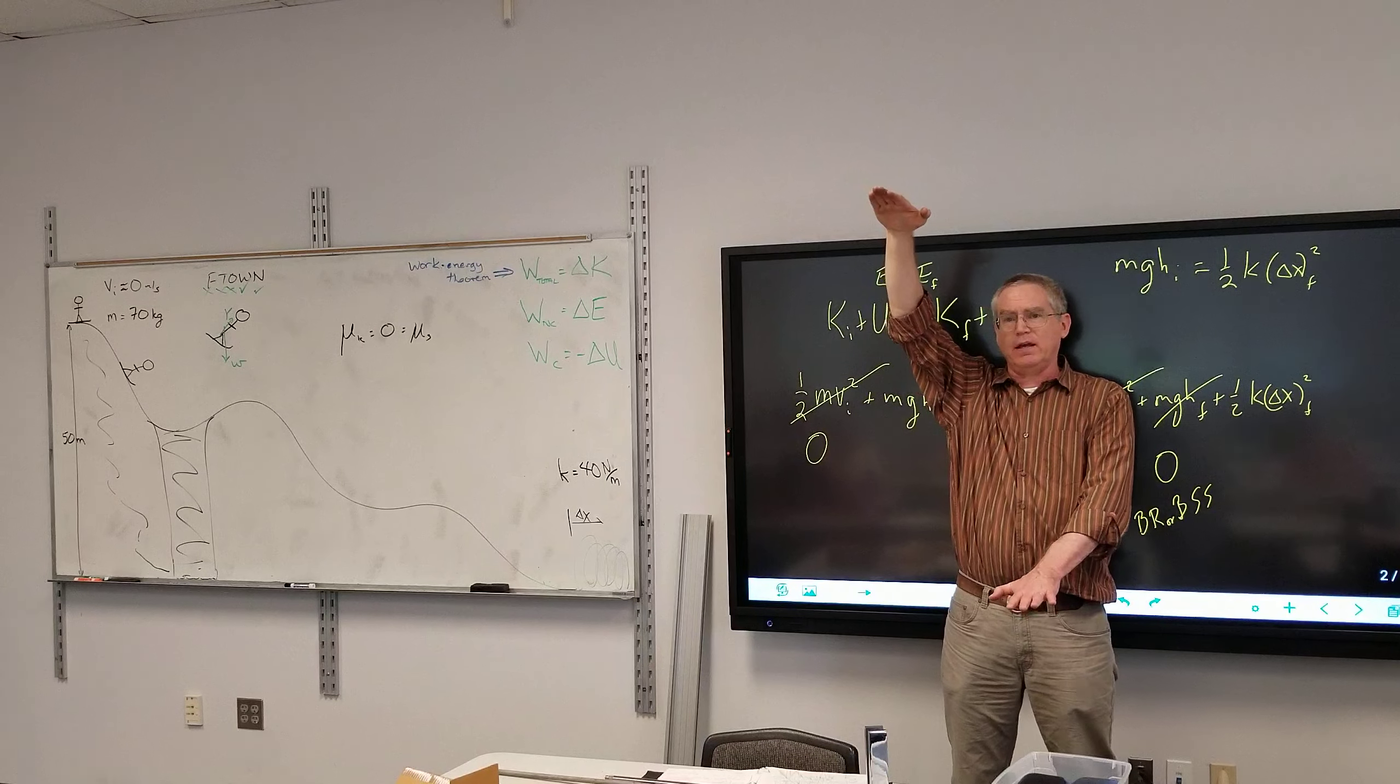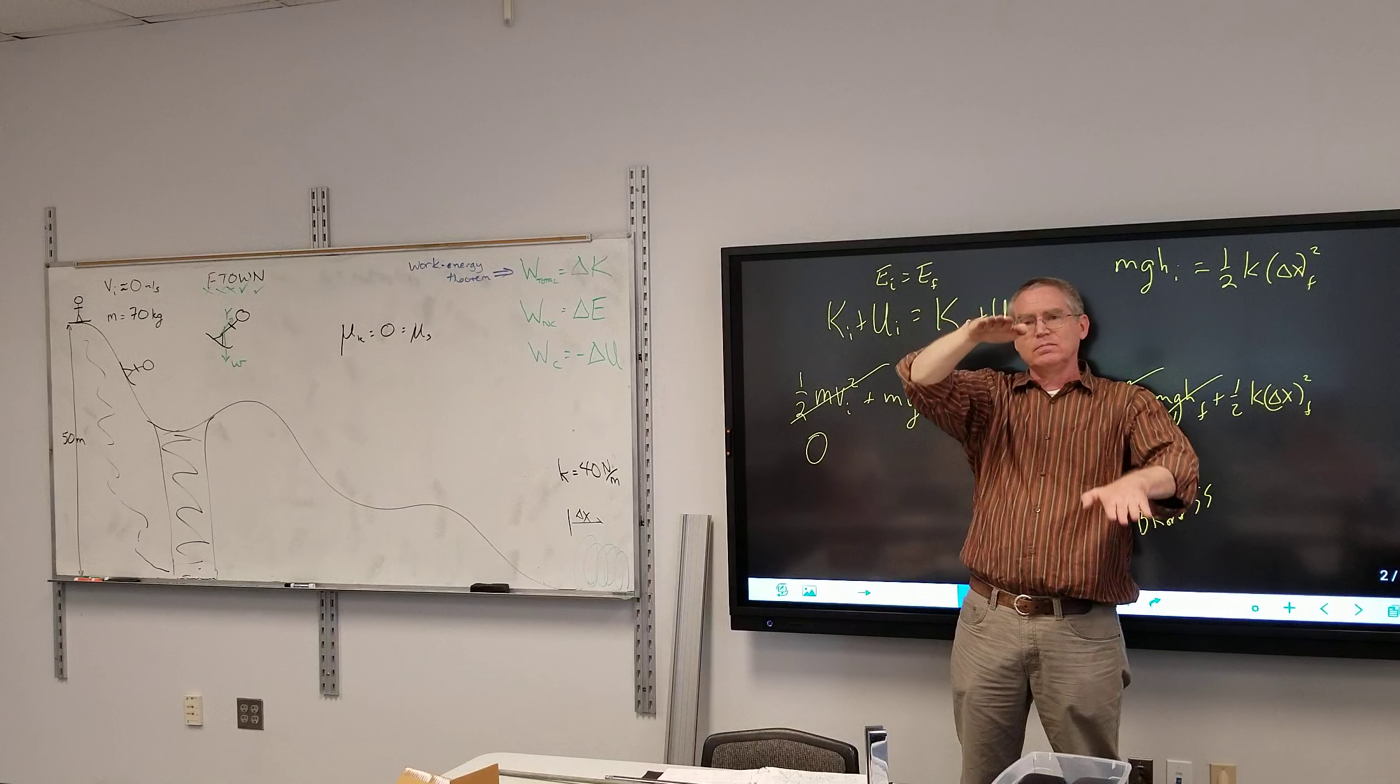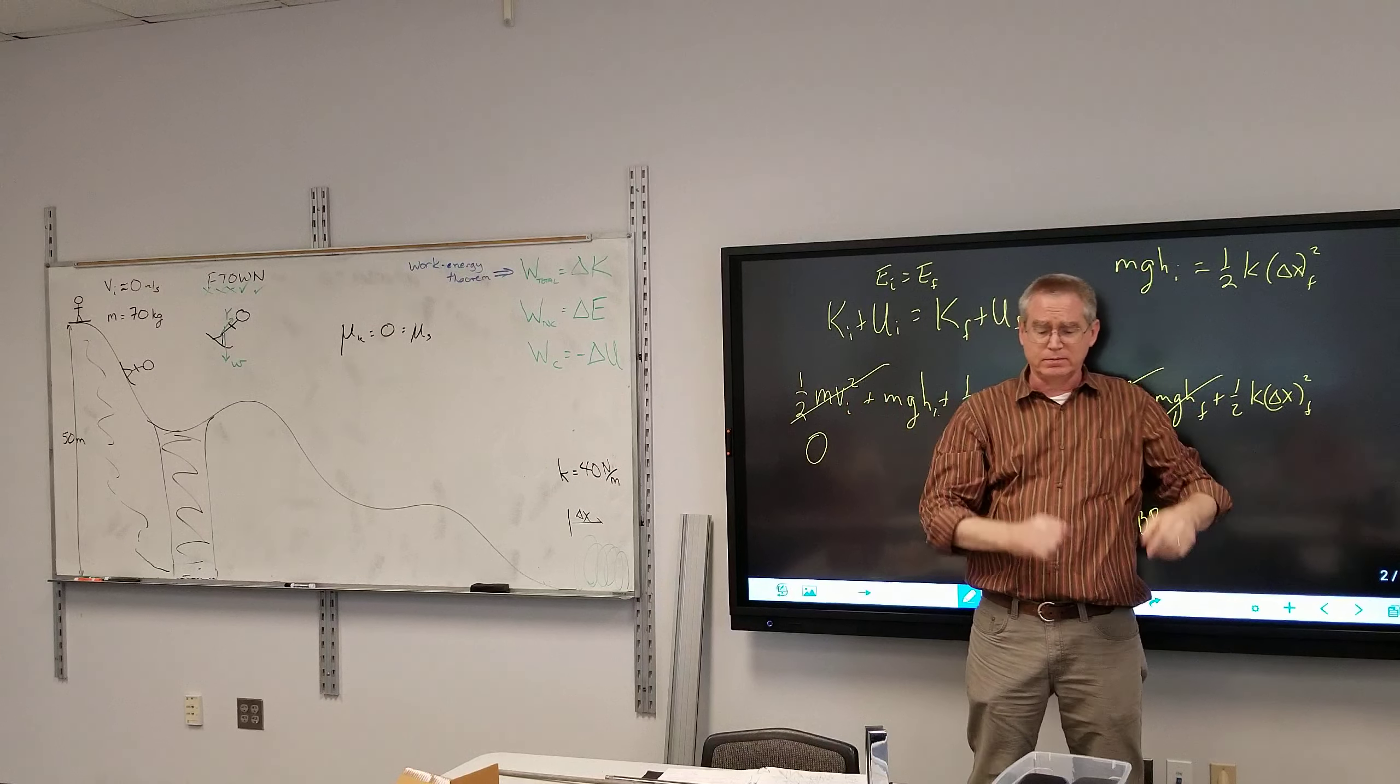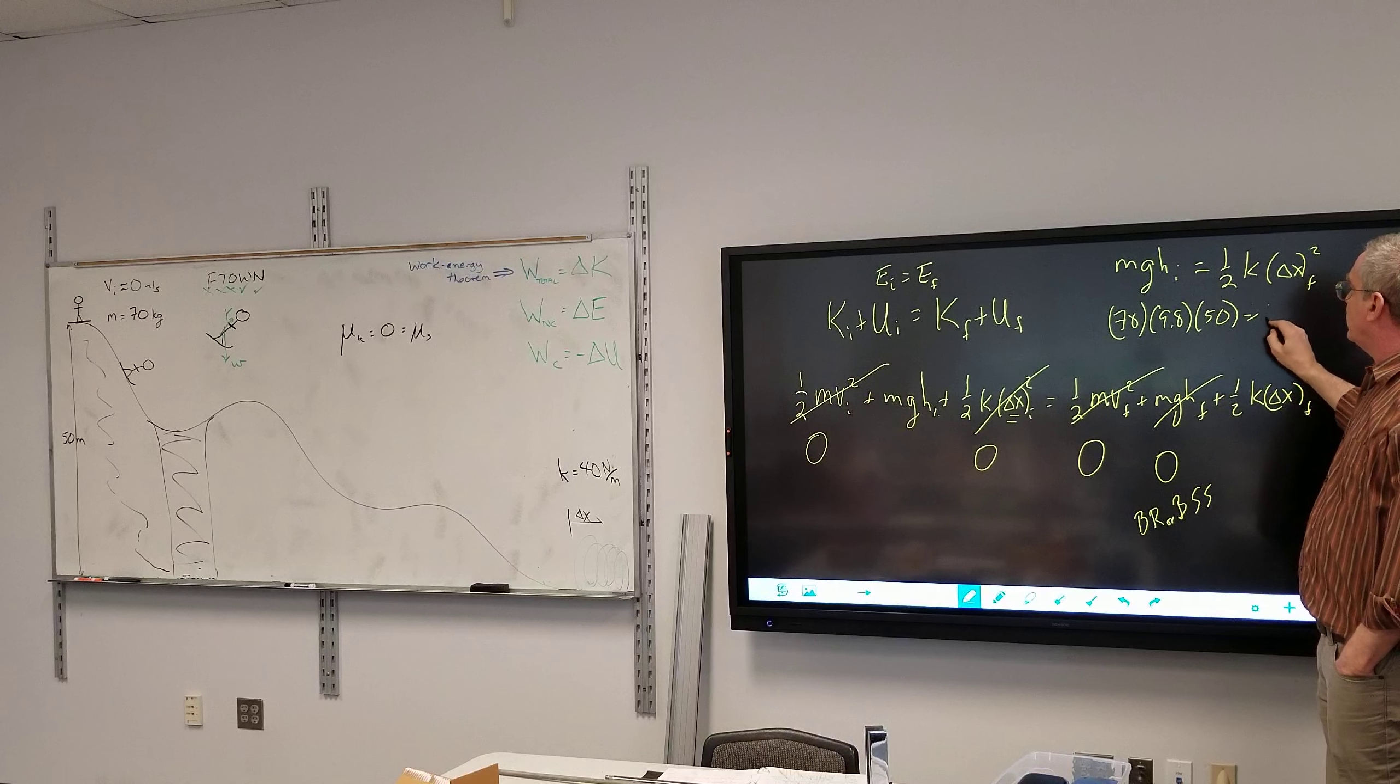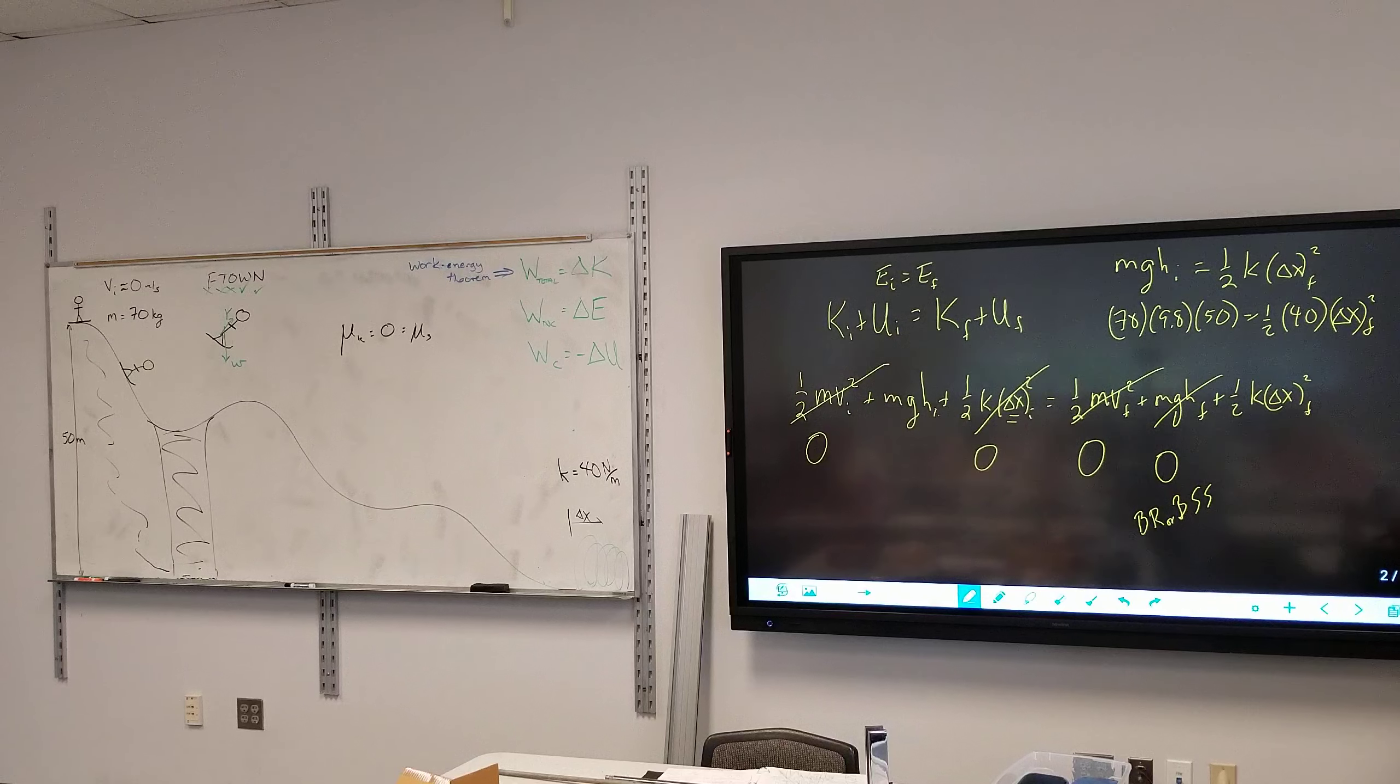So we start out with all this gravitational potential, no kinetic and no elastic potential. As it moves down, the kinetic increases, the gravitational potential decreases and oscillates back and forth until at the end, the bottom of the ski slope, it's all kinetic and no elastic potential and then as he hits it, the kinetic drops as it's slowing down and the elastic potential increases because it's getting compressed. So now, plug your numbers. 70 times 9.8 times 50 is equal to one half times 40 times delta x squared.